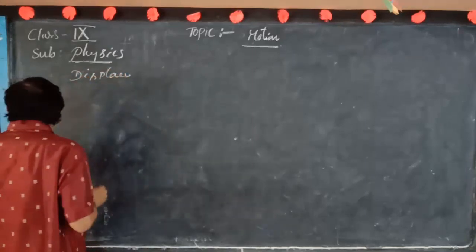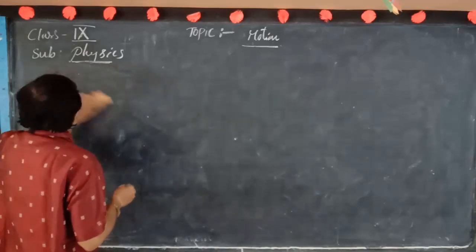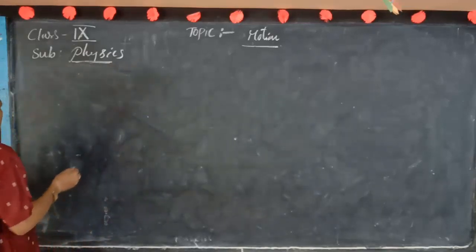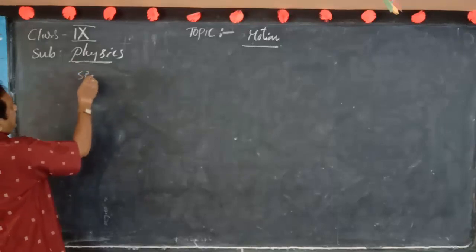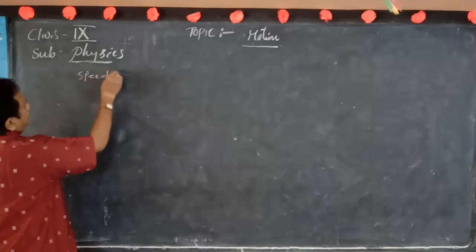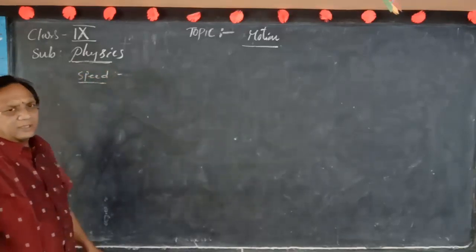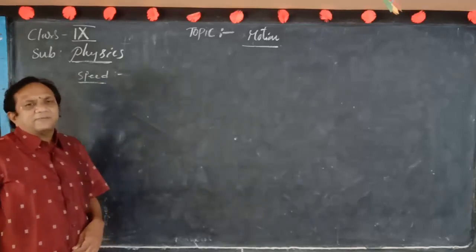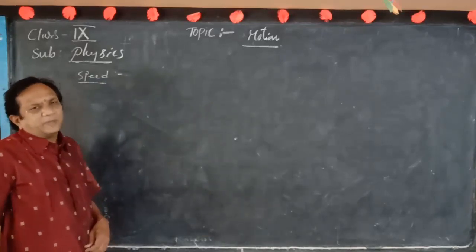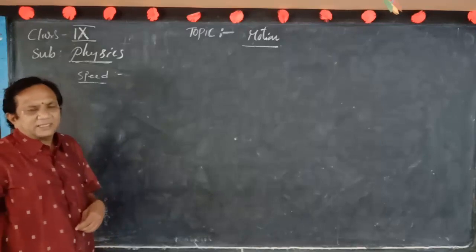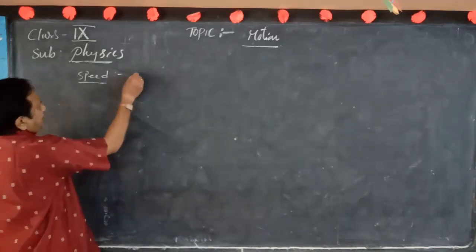I think displacement and distance are all covered. Now, once again, let's repeat the definition of speed. The distance travelled by a body per unit time is called speed.